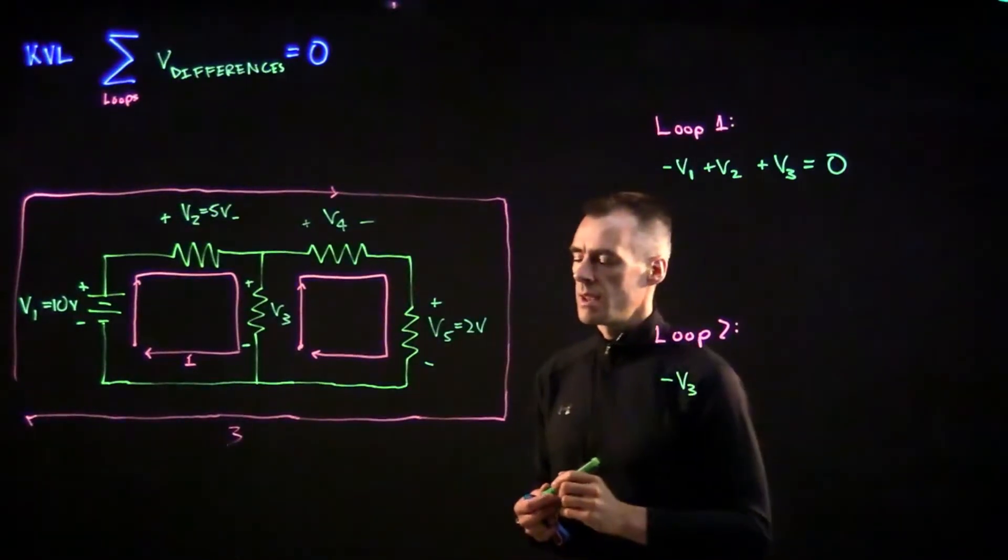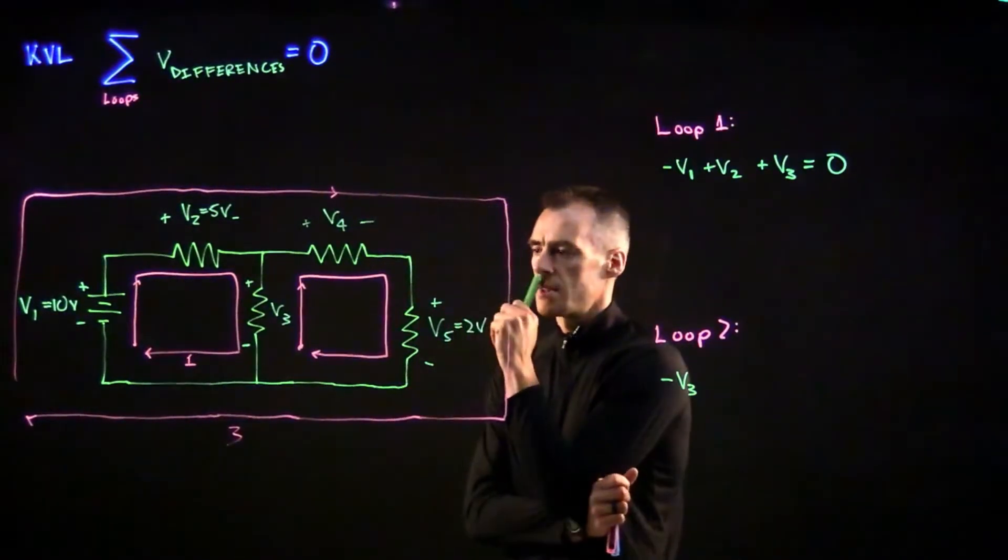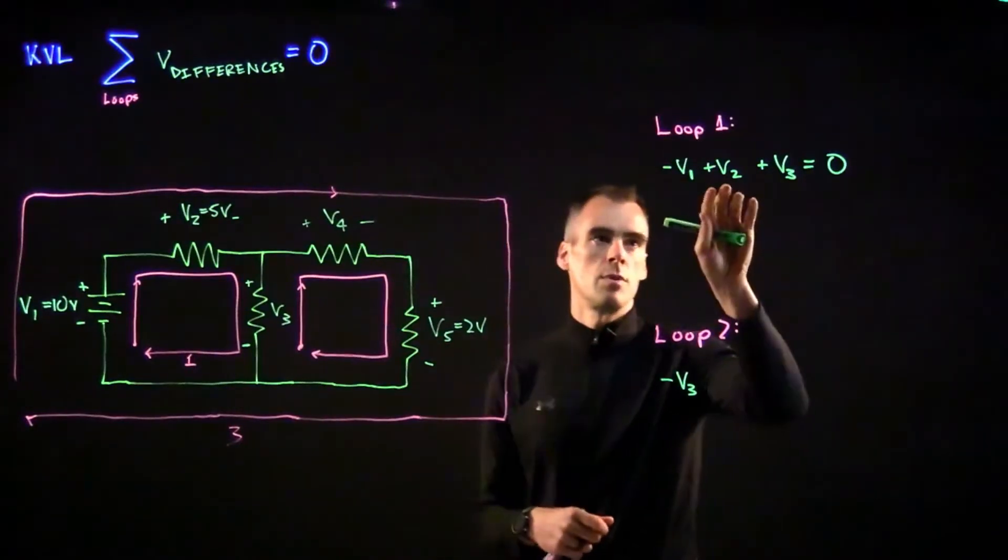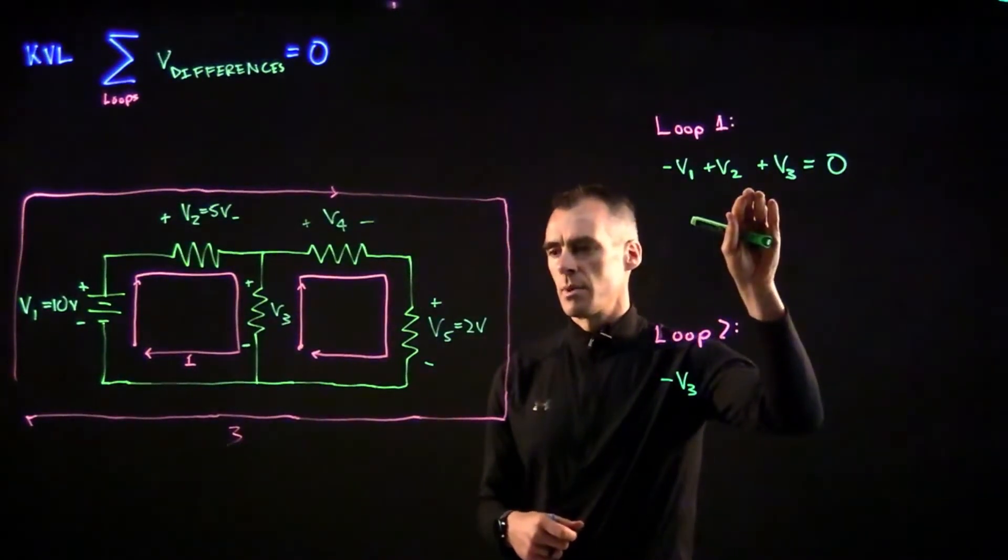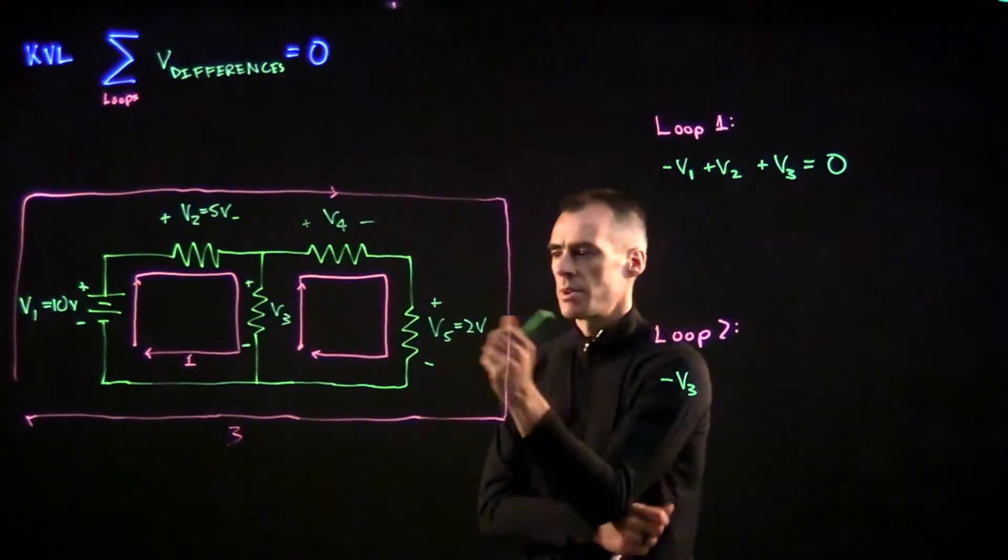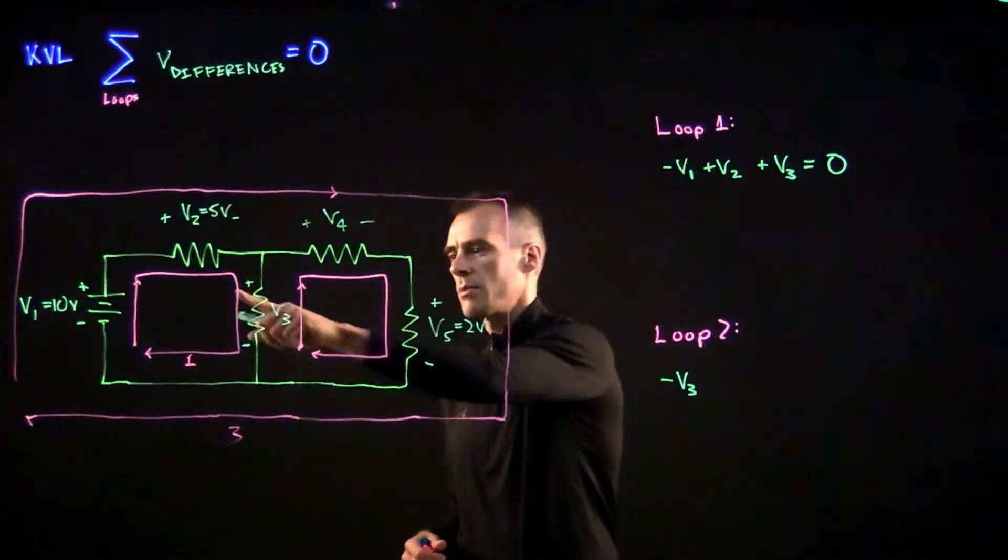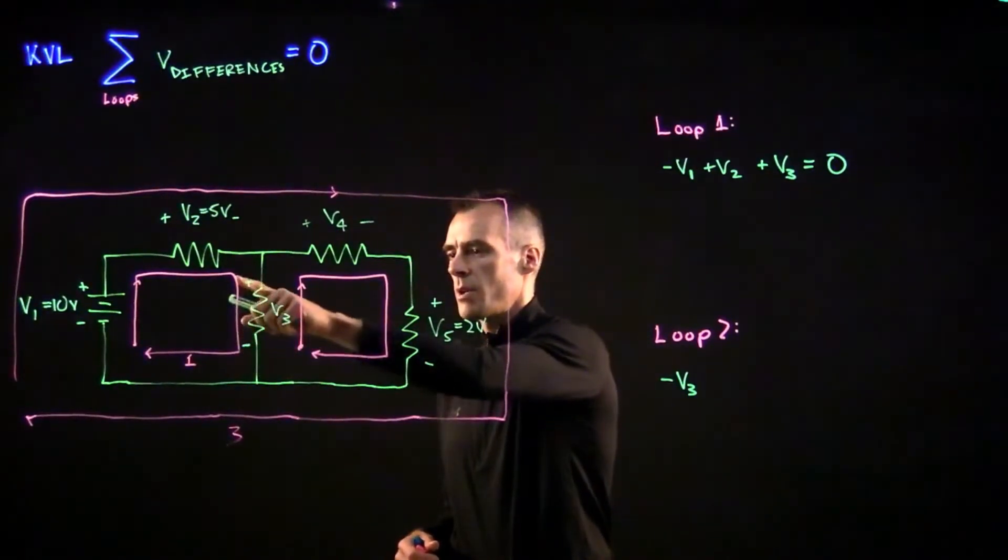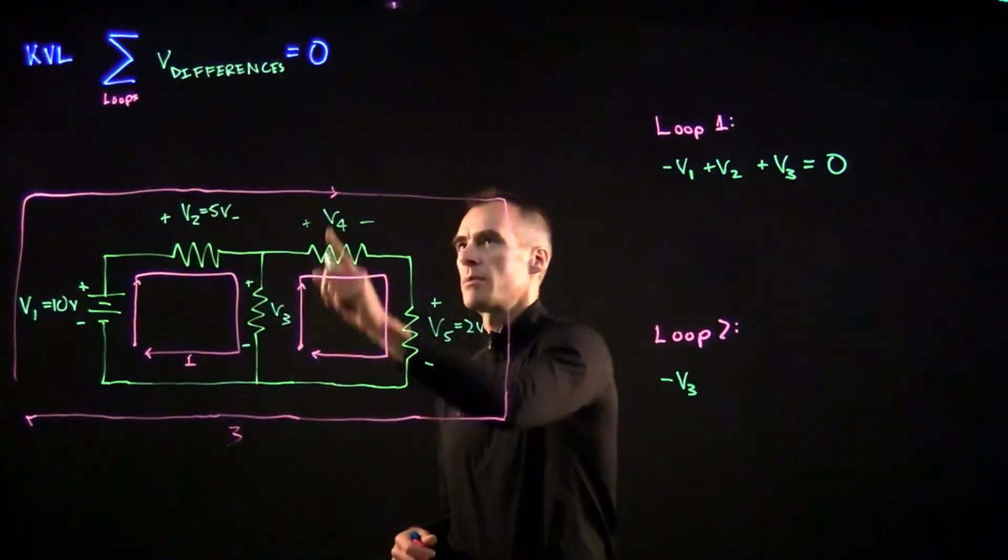Now you might be wondering about this, because in this other equation, as we went through these resistors we added them, and here we're going through this one and we are starting with a subtraction. But notice that we're going a different way than we were in the other equation. In this side we're going down, in this side we're going up. So while it's positive in this equation, in this loop it's actually going to be negative.